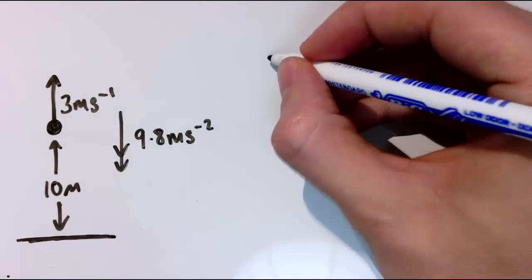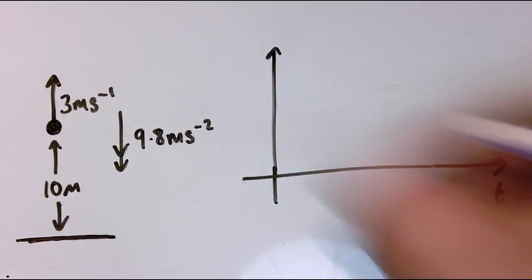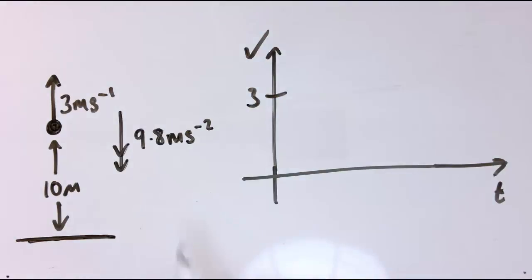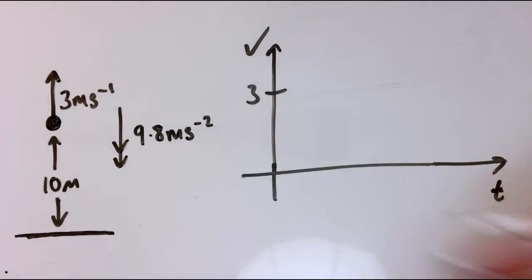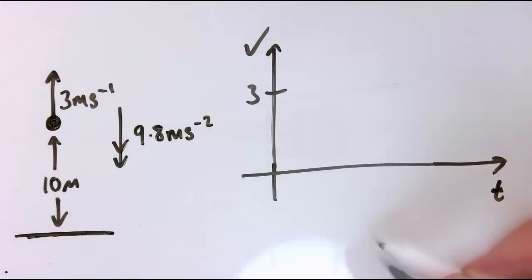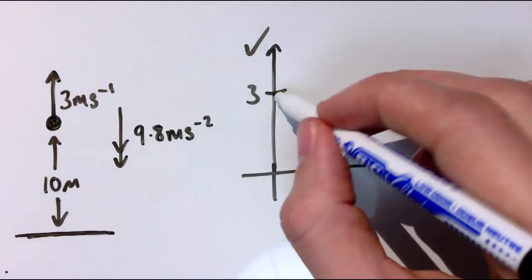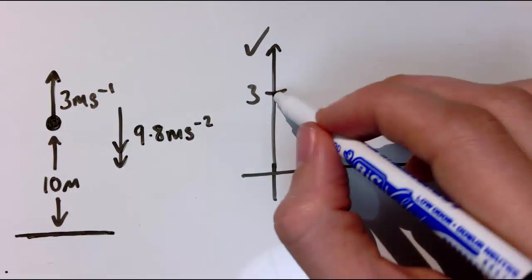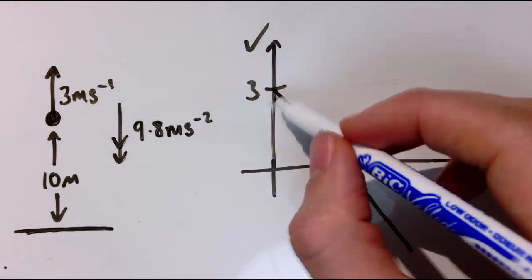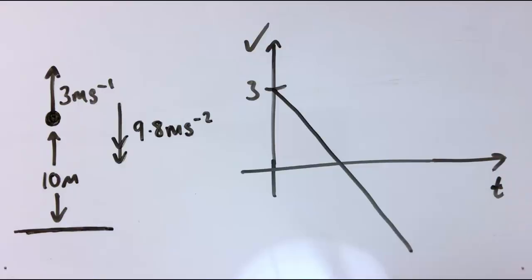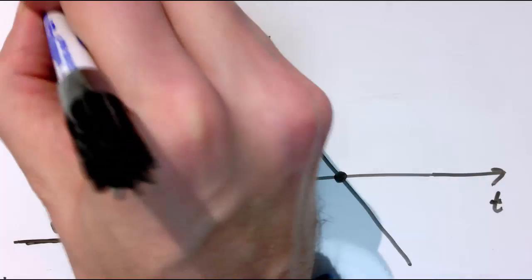Let's think about the VT graph of this particle, so it starts with a velocity of 3 metres per second upwards, and constant acceleration means that every second, this is going to go down by 9.8 metres per second squared. So actually after one second it'll be down at minus 6, so we've got a straight line. The velocity goes up and up and up, there's a point at the top, which is here on the VT graph.